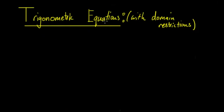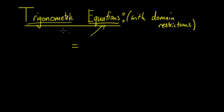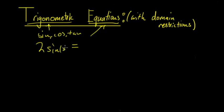In this video we're going to be looking at trigonometric equations with domain restrictions. By trigonometric equations, I mean equations with an equal sign — a left hand side equal to a right hand side — involving a trigonometric function: either sine, cos, or tan. For example, two sine x equals three could be a trigonometric equation.